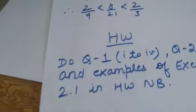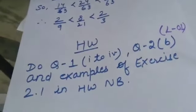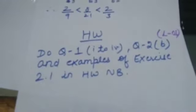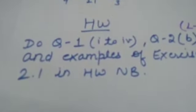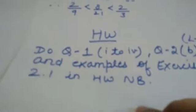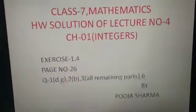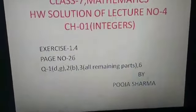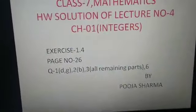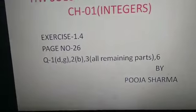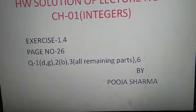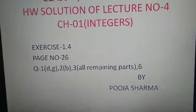I request everyone to note down the homework. You have to do question number 1, parts 1 to 4. We discussed parts 6 and 7 here. Also do question number 2 part B and the examples of exercise 2.1 in your homework notebook. This is all about lecture number 1 of chapter 2. Now let us discuss the homework solution of lecture number 4, covering question number 1 parts D to G, question number 2 part B, question number 3 all remaining parts, and question number 6.